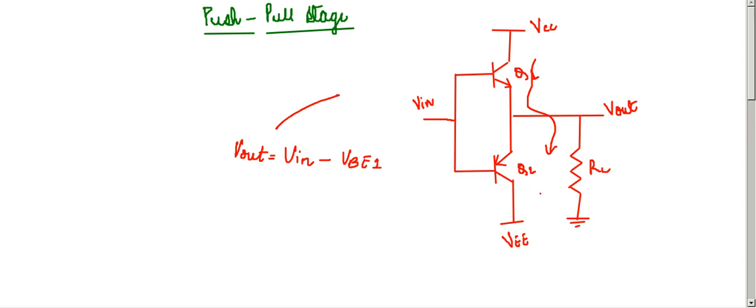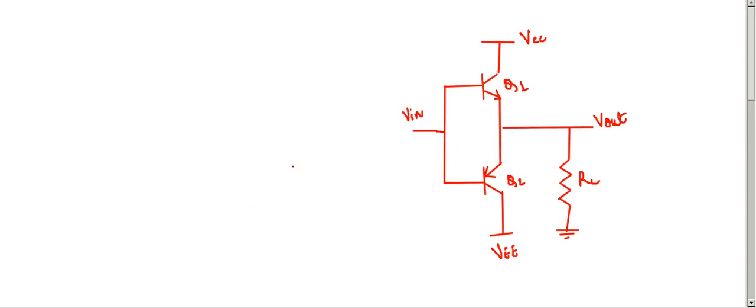Now let us see what happens if VIN is negative. If VIN is negative, then Q1 remains OFF because the base-emitter junction of Q1 is reverse biased, and hence only Q2 conducts. Hence VOUT in this case equals VIN plus VBE2, and the conduction takes place like this.